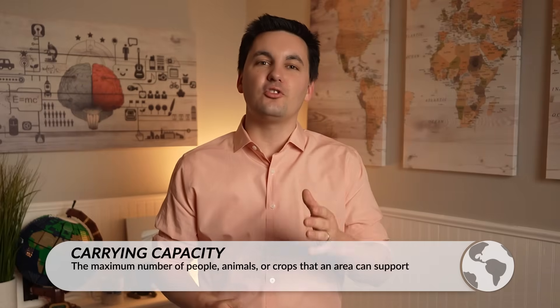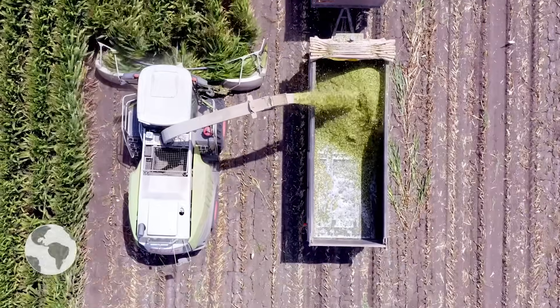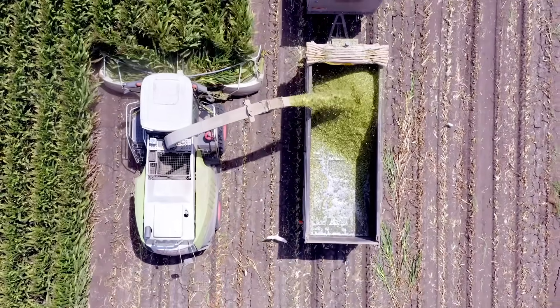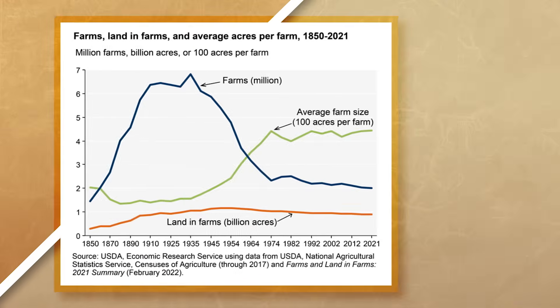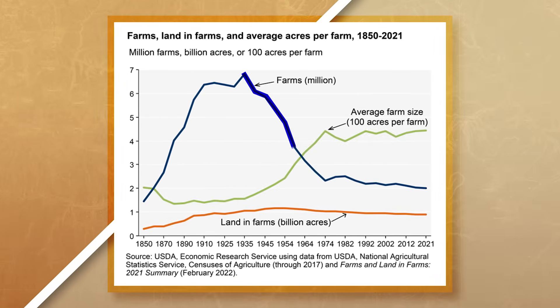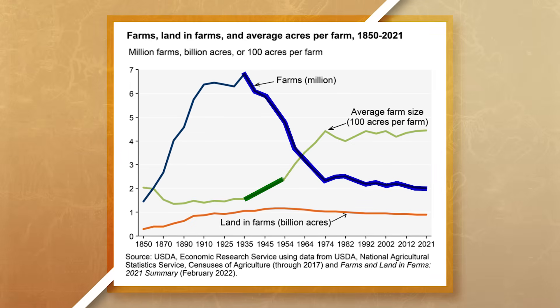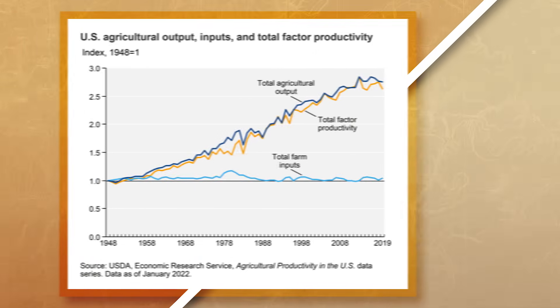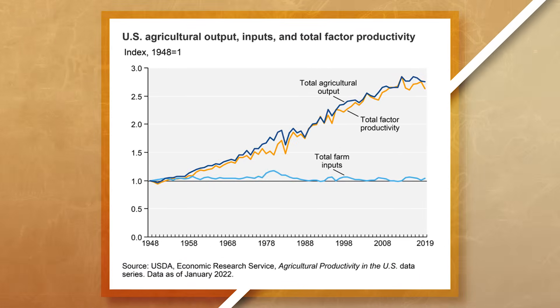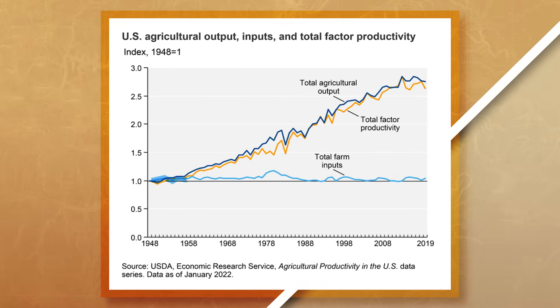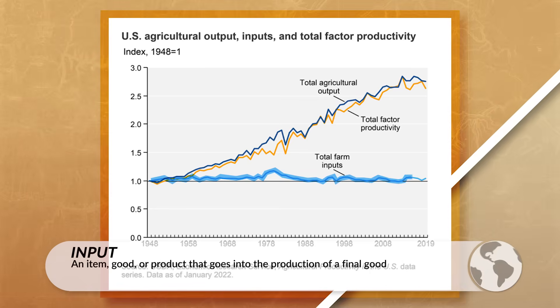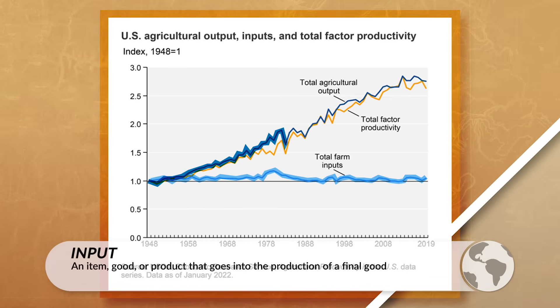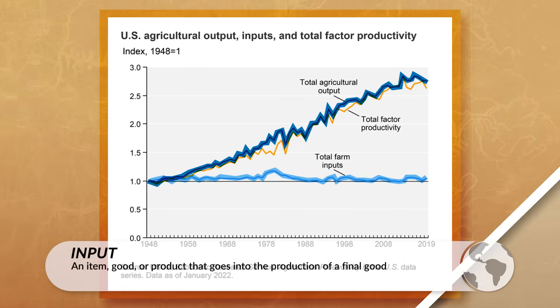These are concepts we last talked about in our Unit 2 Topic 1 video. As industrial farming grows, so does the average size of a farm, as we can see when looking at data from the U.S. Department of Agriculture. Notice how over time, the amount of farms in the United States has decreased, while at the same time, the average farm size has increased. We can also see that total agricultural inputs have remained low over the years, while total agricultural output has significantly risen.